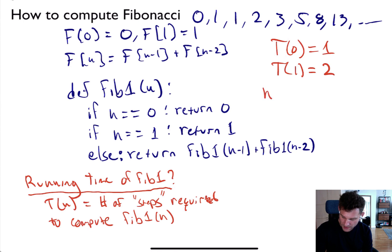And so for n bigger than one, T(n) actually equals T(n-1) + T(n-2) + three. Now, where am I getting three from? Notice that it has to do this operation here, it has to do this operation here, and then it has to compute Fib1(n-1), which is where this T(n-1) is coming from.